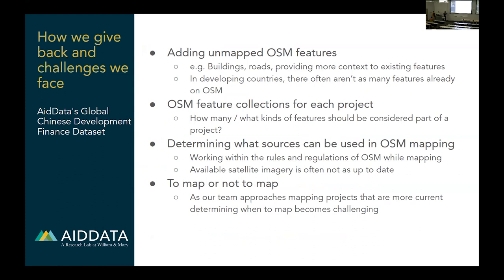On top of using OSM, we also try to give back. That looks like mapping unmapped features in very remote and developing countries where there aren't many people on the ground — things like hospitals, schools, and roads. In already-developed parts of the world with a lot of OSM information, we apply our background research to add more tags and details, such as a hospital's available facilities, number of floors, and ownership information.